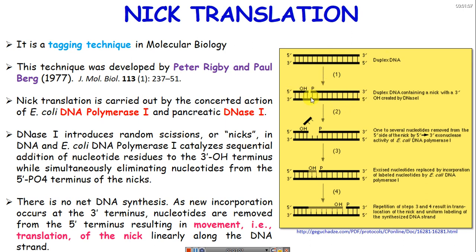DNase I creates nicks by breaking the phosphodiester bond in the backbone, creating a 3' OH and a 5' phosphate group end. DNase I introduces random nicks in the DNA, and then E. coli DNA polymerase I catalyzes sequential addition of nucleotides at the 3' end generated by DNase I.